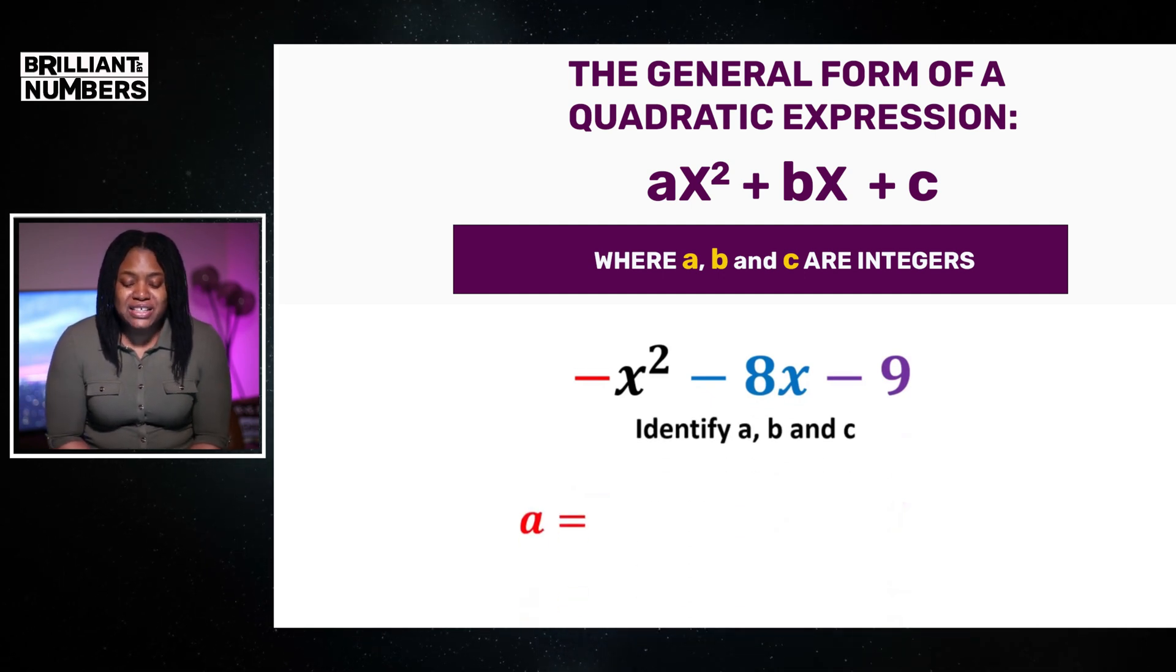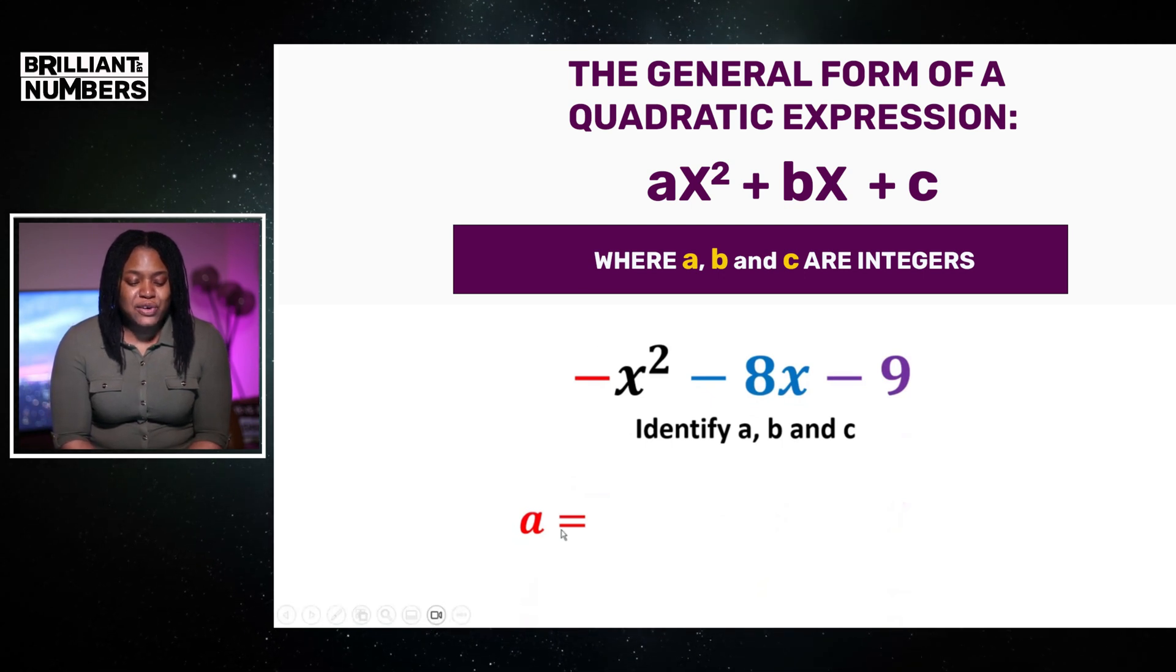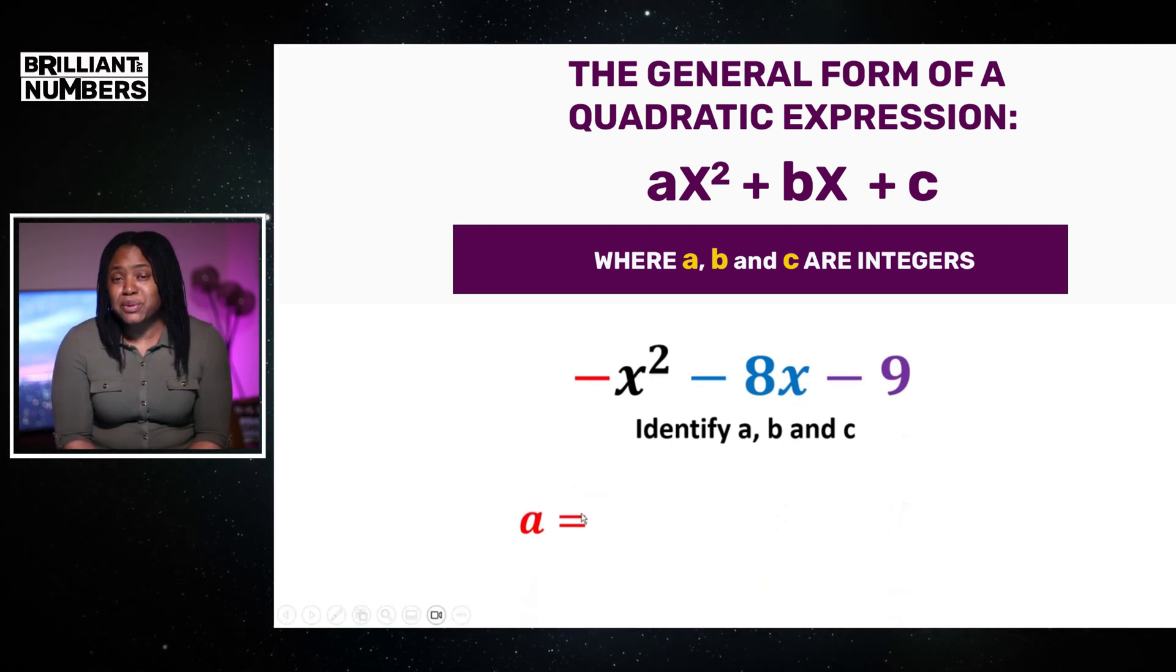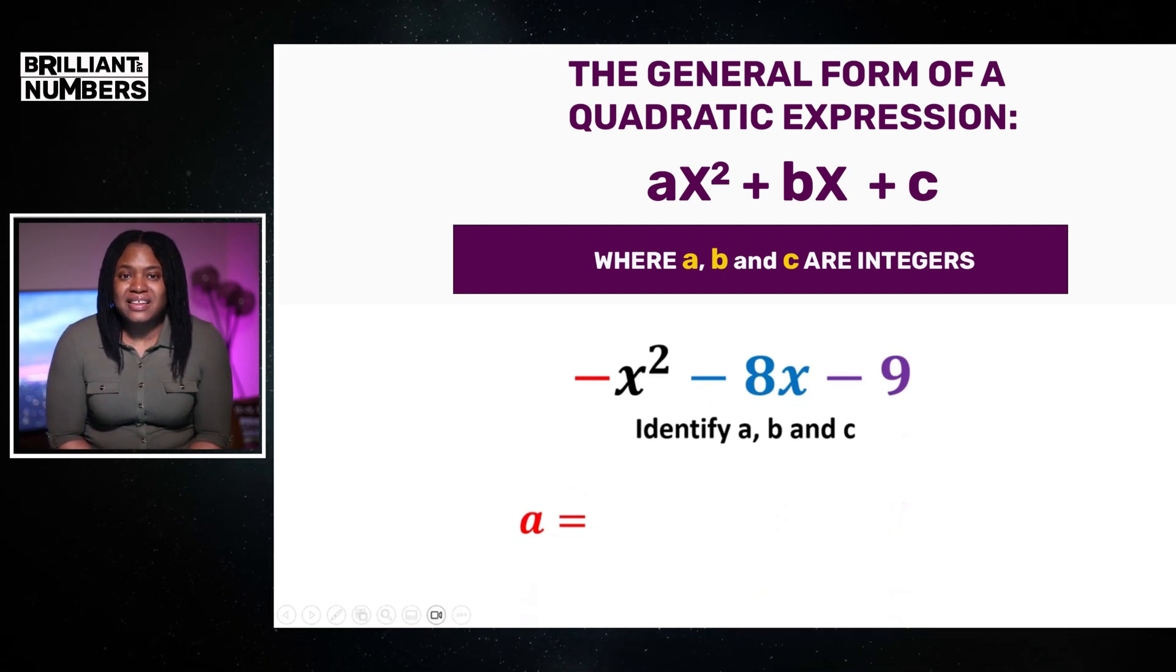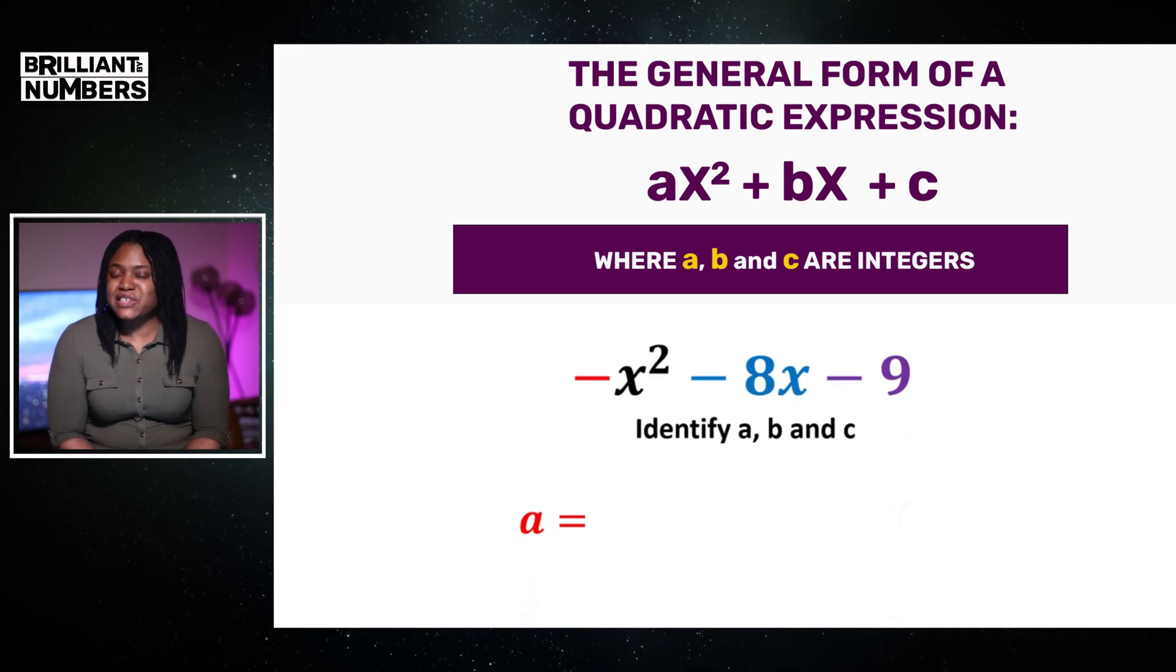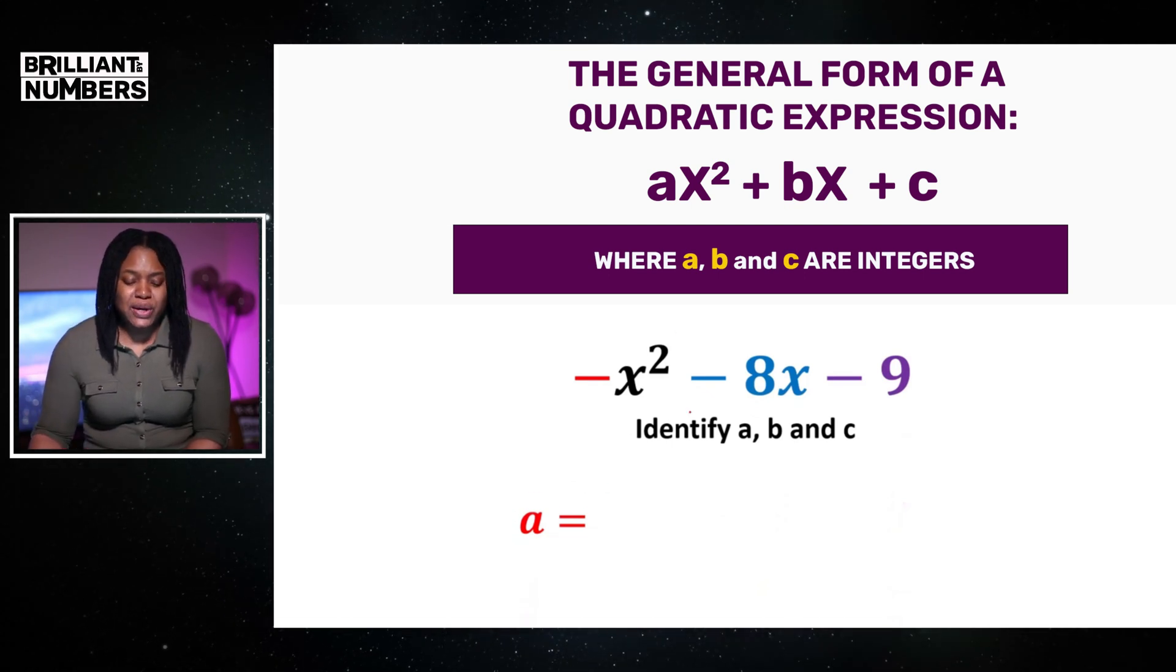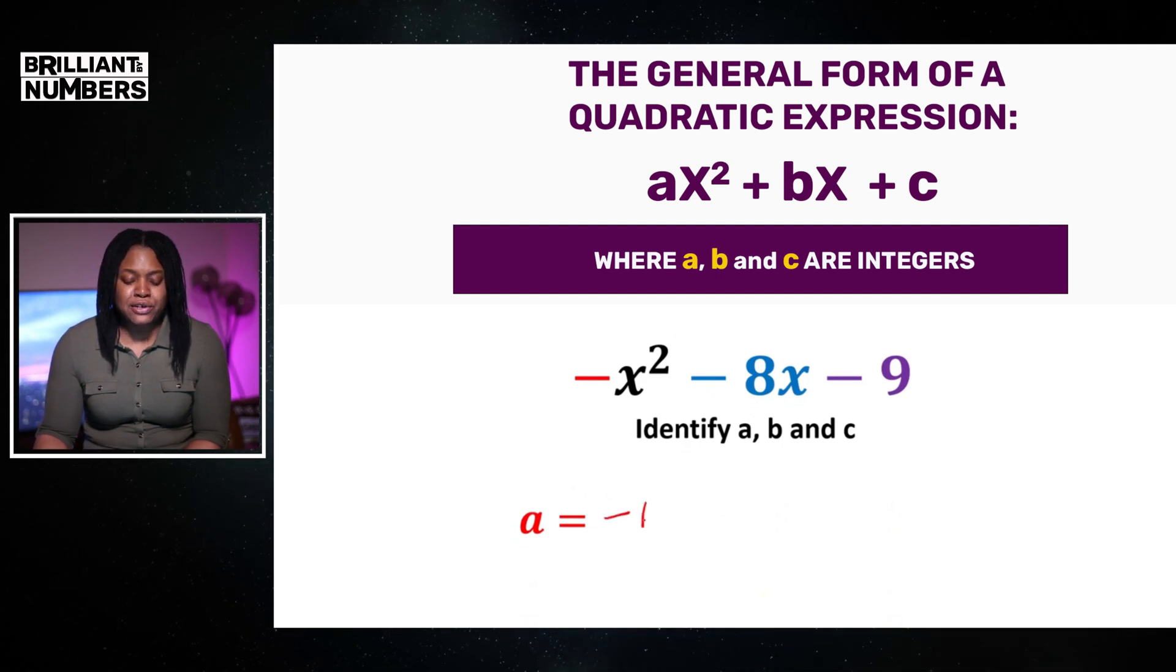So, a is the coefficient of x squared. And I have also color-coded it here. That makes it so much easier to identify. As you can see, there is just a negative sign before x squared. This is indicative of negative 1. So, in this particular expression, a is equal to minus 1.